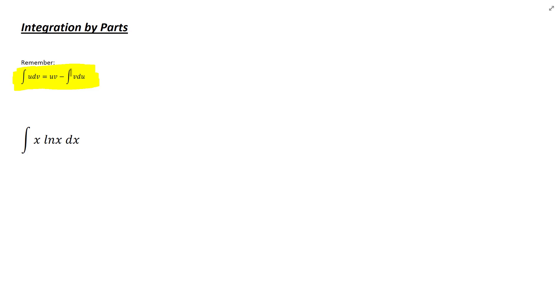Integral of u dv equals uv minus integral of v du. Once you figure out what your u is and what your dv is, then you can proceed and solve the problem.